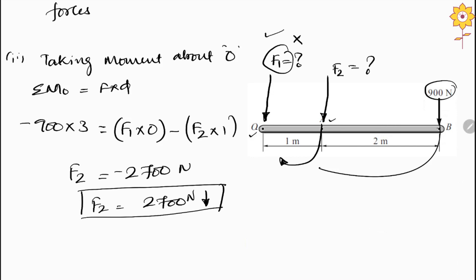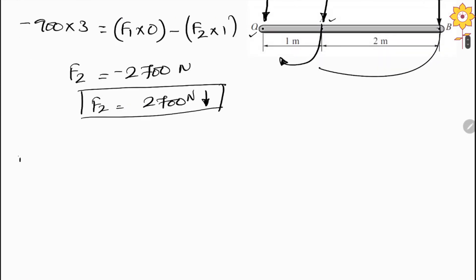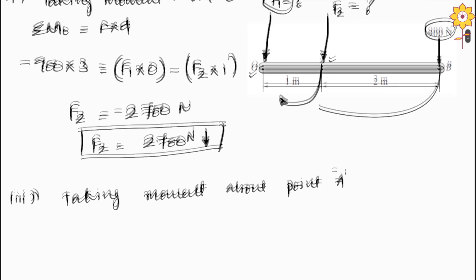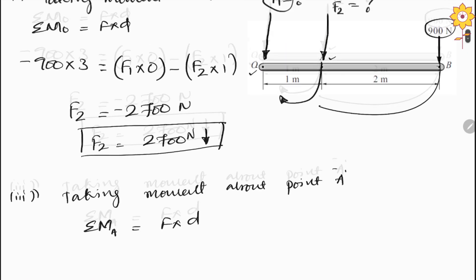Now to find out F1, we take the moment about point A, applying Varignon's theorem. So about point A, summation of moment M_A is equal to F into d.